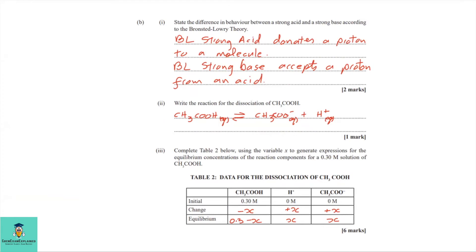2B part one: state the difference in behavior between a strong acid and a strong base according to Brønsted-Lowry theory. A strong acid is a substance that donates a proton to a molecule, while a strong base is a substance that accepts a proton from an acid.